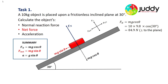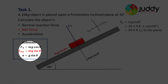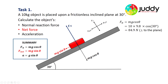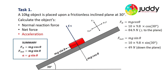Next, we calculate the net force using the equation Fnet equals Mg sin theta, applicable for a frictionless inclined plane. Substituting m = 10, g = 9.8 N/kg, and angle = 30 degrees, the net force is 49 newtons down the plane. Finally, for acceleration, A equals g sin theta: 9.8 times sin 30 degrees gives an acceleration down the plane of 4.9 meters per second squared.